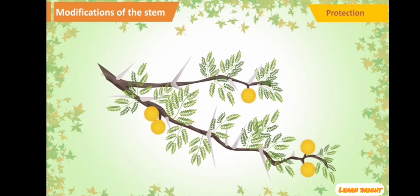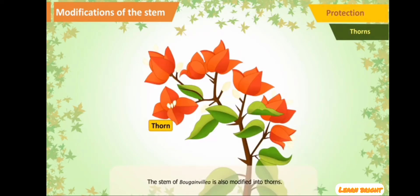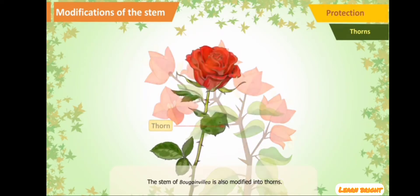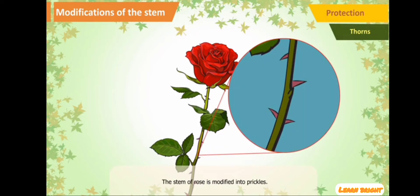Protection: The stem of bougainvillea is modified into thorns, while that of the rose is modified into prickles.